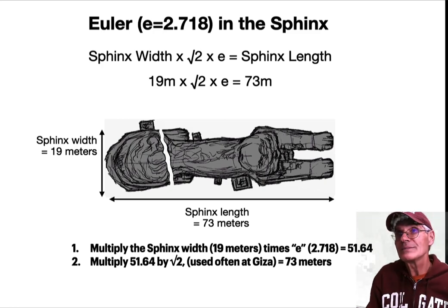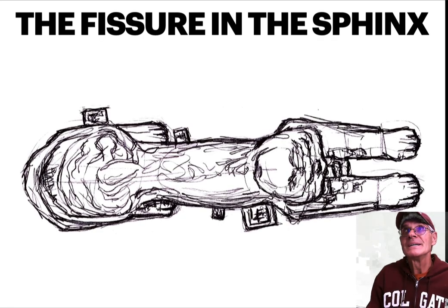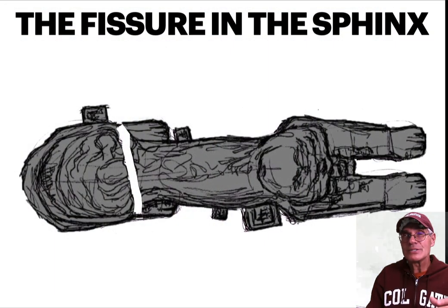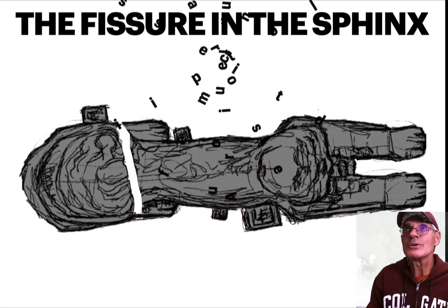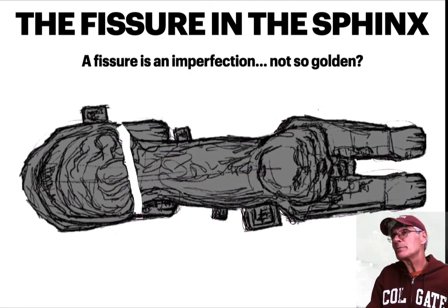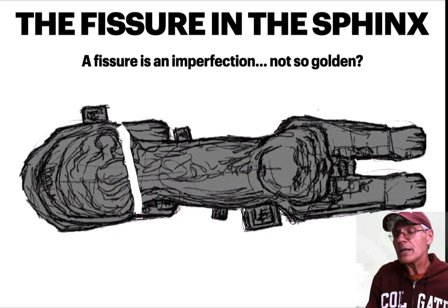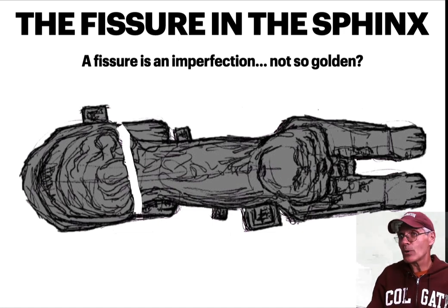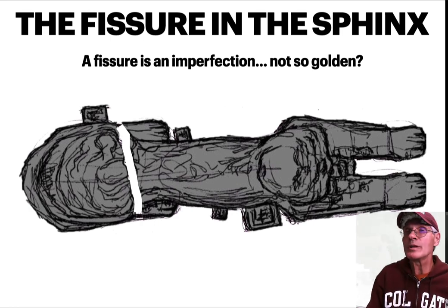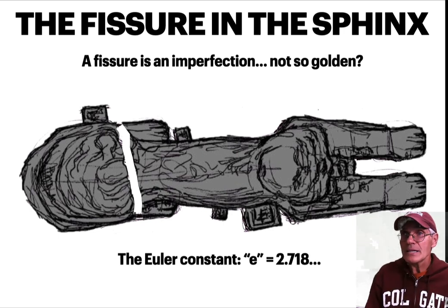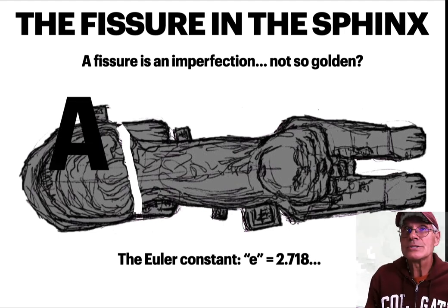Now let's look at that fissure in the Sphinx more closely. As I mentioned, it's been repaired, but that's how wide the gap was at one time. A fissure is an imperfection. We've just seen how the Sphinx is golden, but the fissure is not a golden thing. Even so, the ancient Egyptians actually worshipped that fissure, because they believed it was created or caused by God — so it was considered a holy thing, even though it's a wound in the animal.